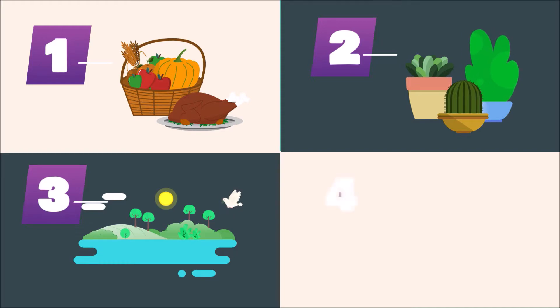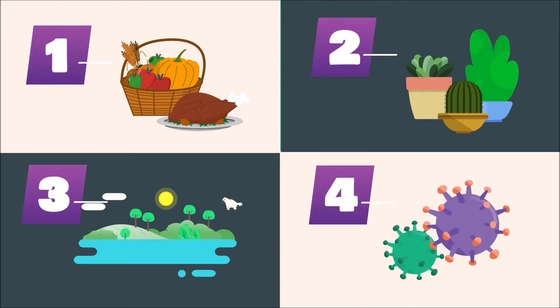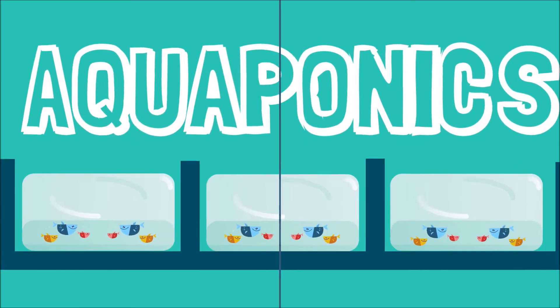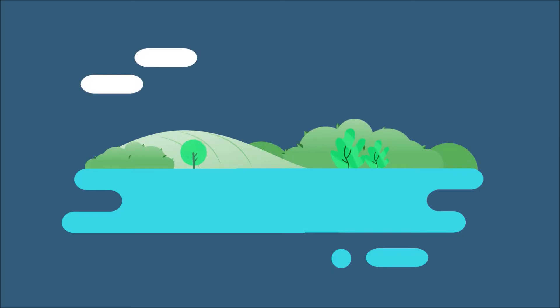Is aquaponics better than traditional methods of fish farming? Maybe. Let's learn more. The world is constantly changing, and the world of agriculture and food production is changing as well. A consistently increasing world population means that urban sprawl is taking over what was once fertile farmland.